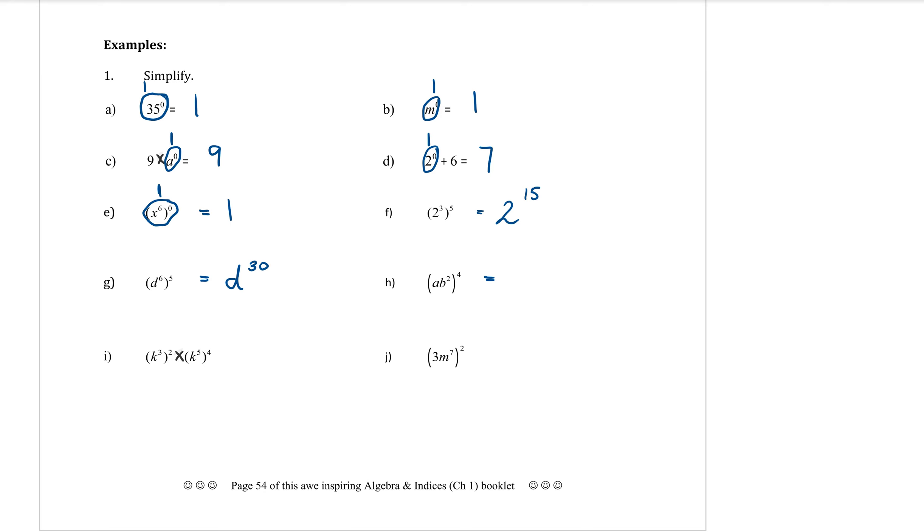H. As we get more things in the brackets, each one of those, you have to times each one of those powers together. So I have an A there. Remember, that's an A to the power of one. So let's start with the A as the base. Timesing the powers together. Make sure we times. One times four is four. Timesing powers. B is the second base. And I want to go two times four, which is eight.